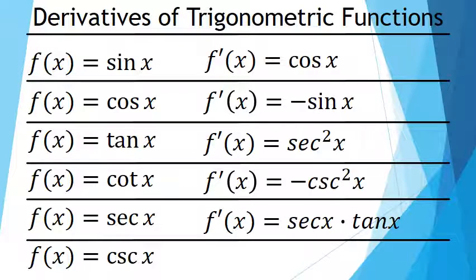The derivative of the secant of x is the secant of x times the tangent of x. And the derivative of the cosecant of x is equal to the opposite of the cosecant of x times the tangent of x.